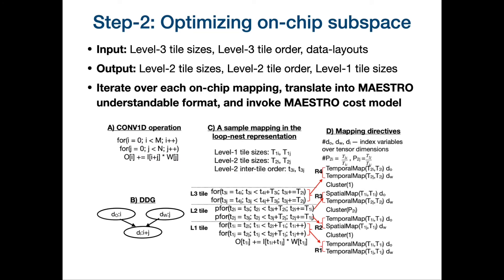The next step in our approach is to optimize the on-chip subspace. This on-chip subspace is constructed using the optimal mappings from the off-chip subspace obtained in step 1. Step 2 involves iterating over each on-chip mapping by translating the mapping in loop nest form into Maestro directives and using the Maestro cost model to estimate latency, energy, and other metrics. More details about how this translation is done can be found in our MARVEL arXiv paper.